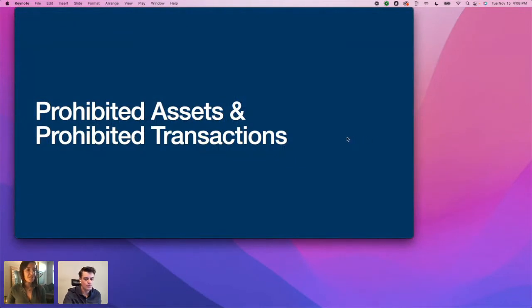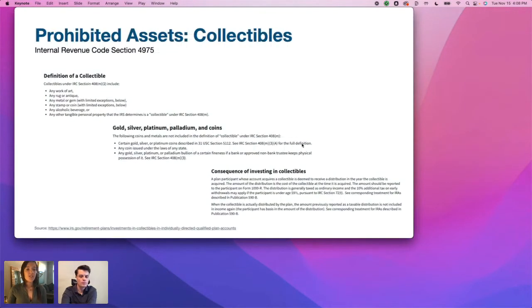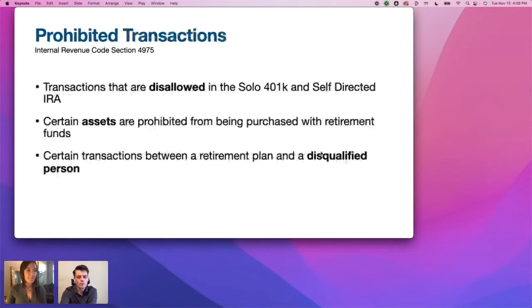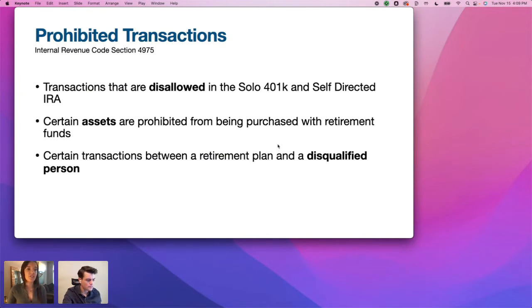Let's talk about prohibited assets and prohibited transactions. Collectibles are prohibited; besides that, there are very few assets that are off limits. Certain gold, silver, platinum, and palladium coins are not allowed, so be familiar with that. Prohibited transactions are transactions not allowed within your Solo 401k or self-directed IRA — certain assets like collectibles, and crucially, certain transactions between a retirement plan and a disqualified person.